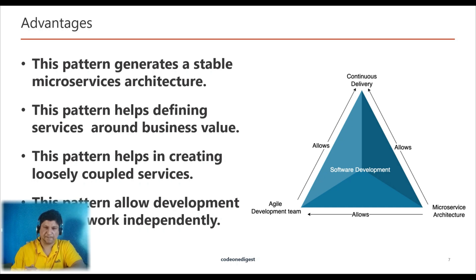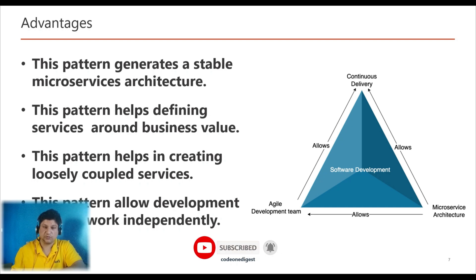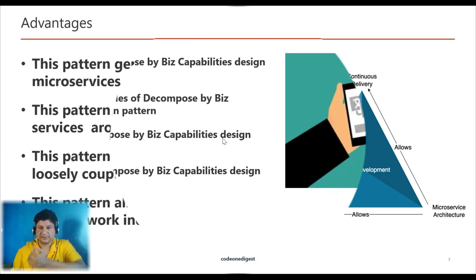Let's understand the advantages of this pattern. This pattern generates a stable microservice architecture if the business capabilities are relatively stable. Development teams are cross-functional and organized around delivering business value instead of technical features. Services are loosely coupled, and because the business capabilities are stable, this architecture is highly stable. Cross-functional teams are another advantage — development teams can work independently and also use different technologies.